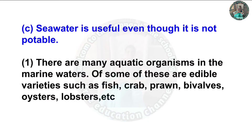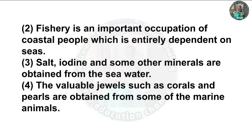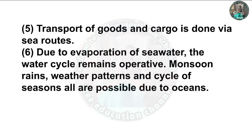Question 2(c): Seawater is useful even though it is not potable. Answer: There are many aquatic organisms in marine waters; some are edible varieties such as fish, crab, prawn, bivalves, oyster, lobsters etc. Fishery is an important occupation of coastal people. Salt, iodine and other minerals are obtained from seawater. Valuable jewels such as corals and pearls are obtained from marine animals. Transport of goods and cargo is done via sea routes. Due to evaporation of seawater, the water cycle, monsoon rains, weather patterns and cycle of seasons are all maintained.